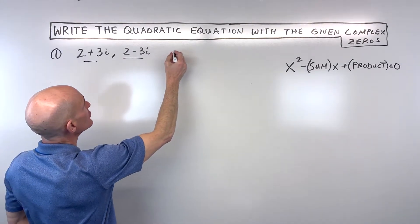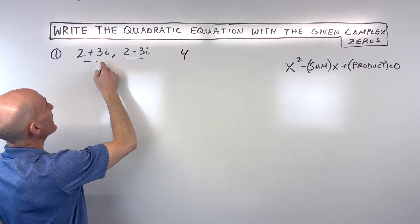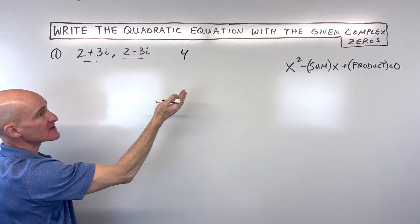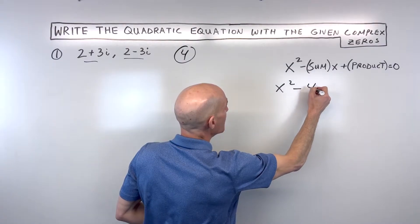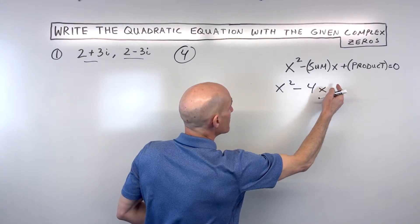So 2 plus 2 is equal to 4 and 3i plus negative 3i is 0. So the sum is going to be 4. So what we have here is x squared minus 4x plus the product.